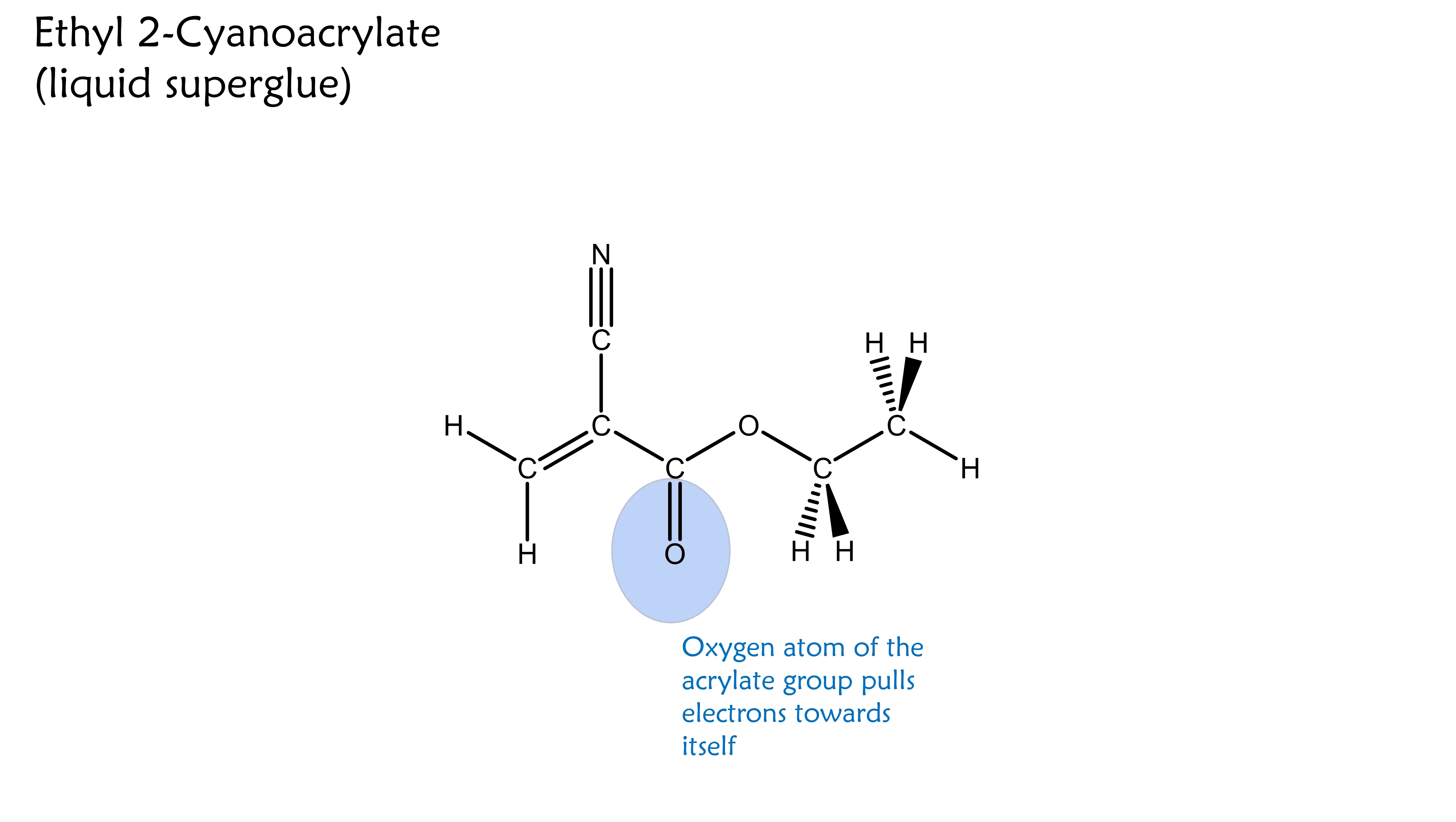In cyanoacrylate, the oxygen and nitrogen atoms pull electron density from nearby atoms towards themselves. Importantly, this puts a partial positive charge on the carbon atoms.